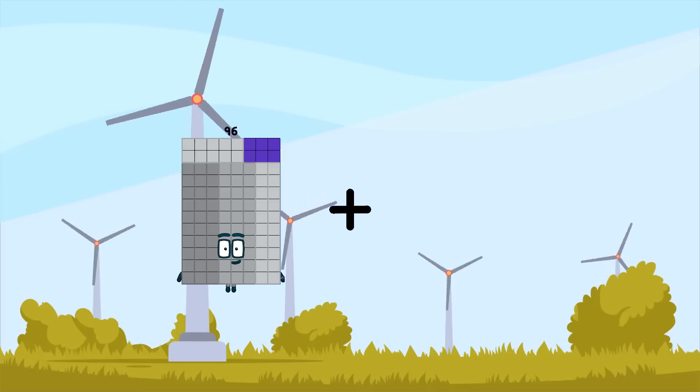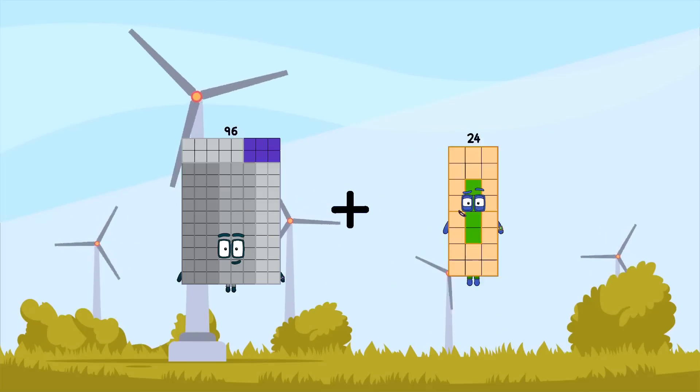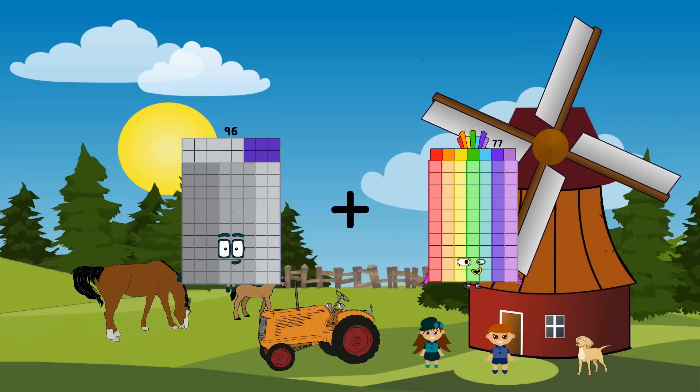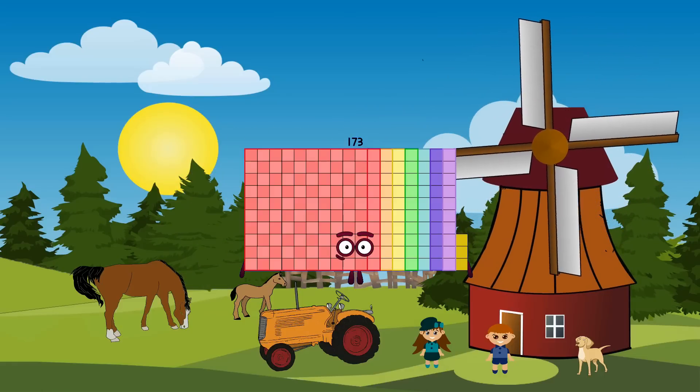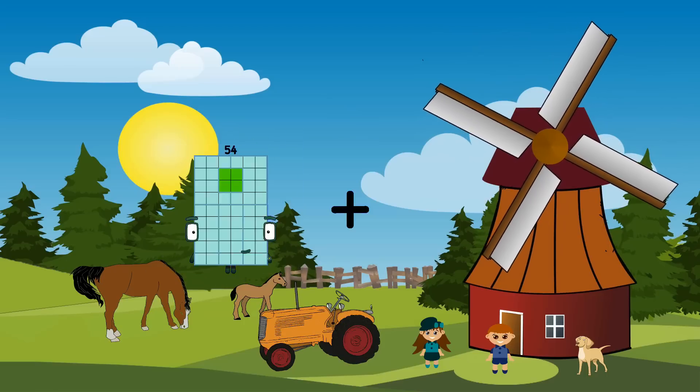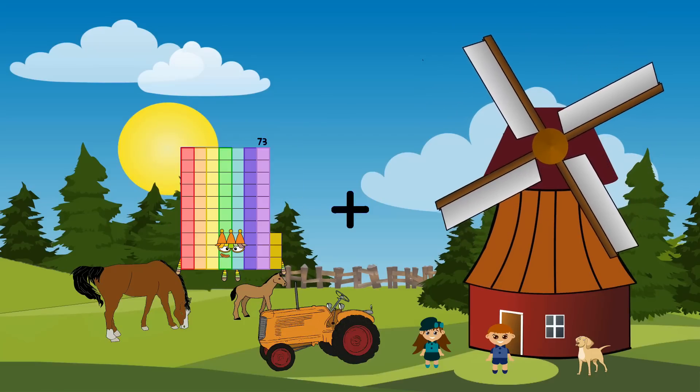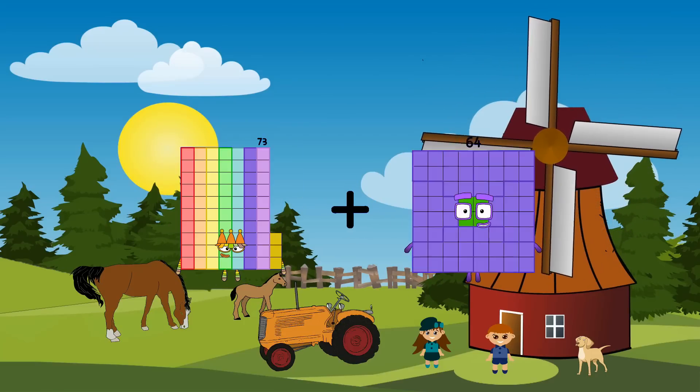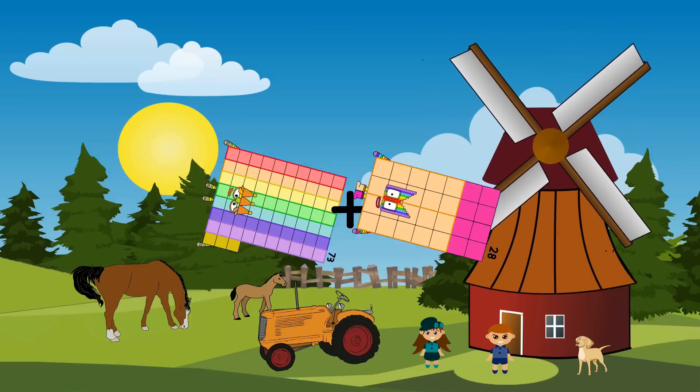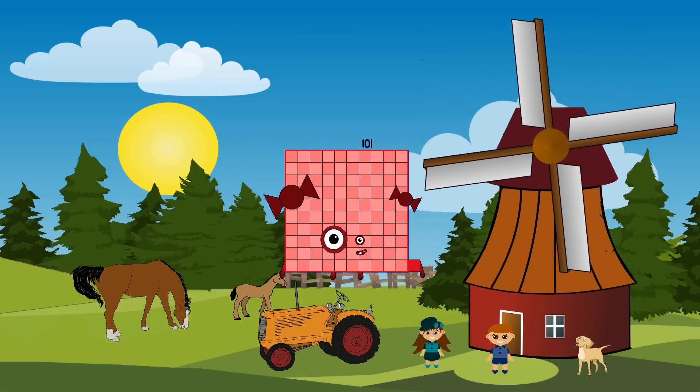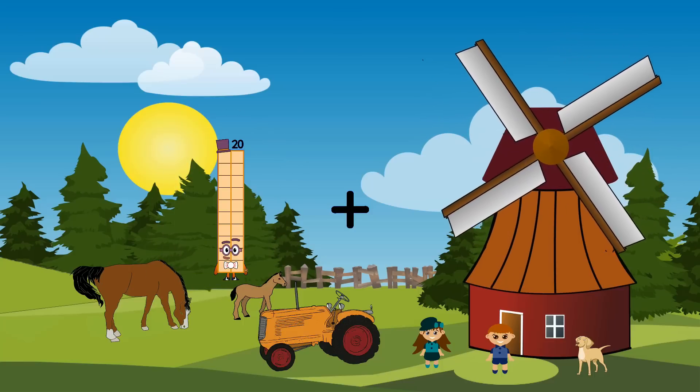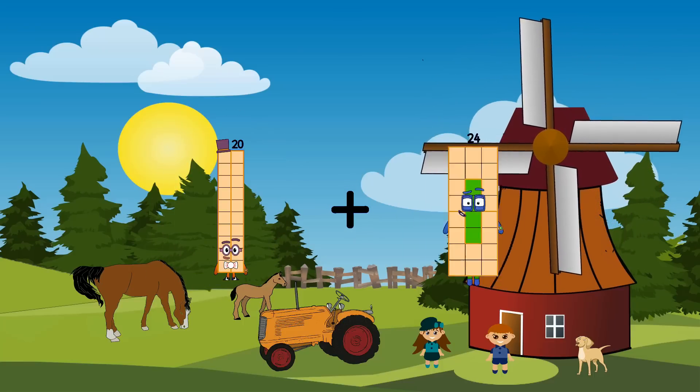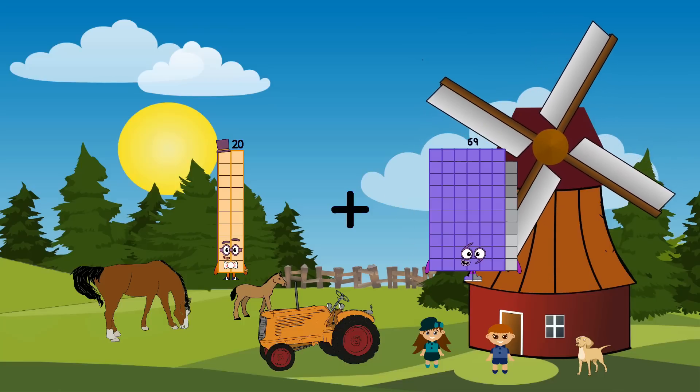97 plus 76 equals 173. 73 plus 28 equals 101. 20 plus 62 equals 82.